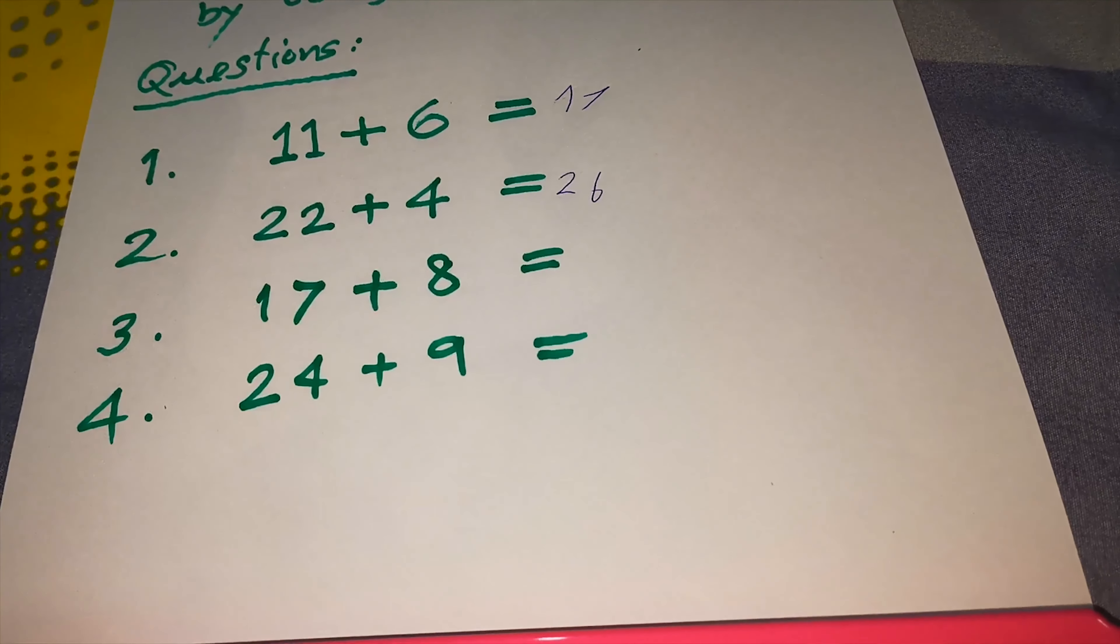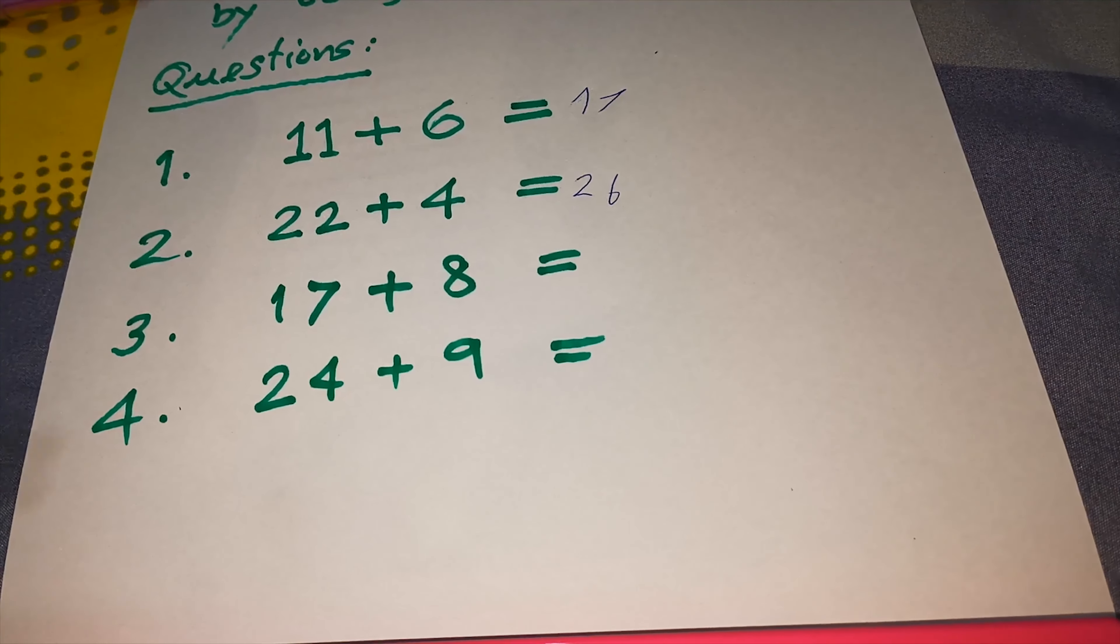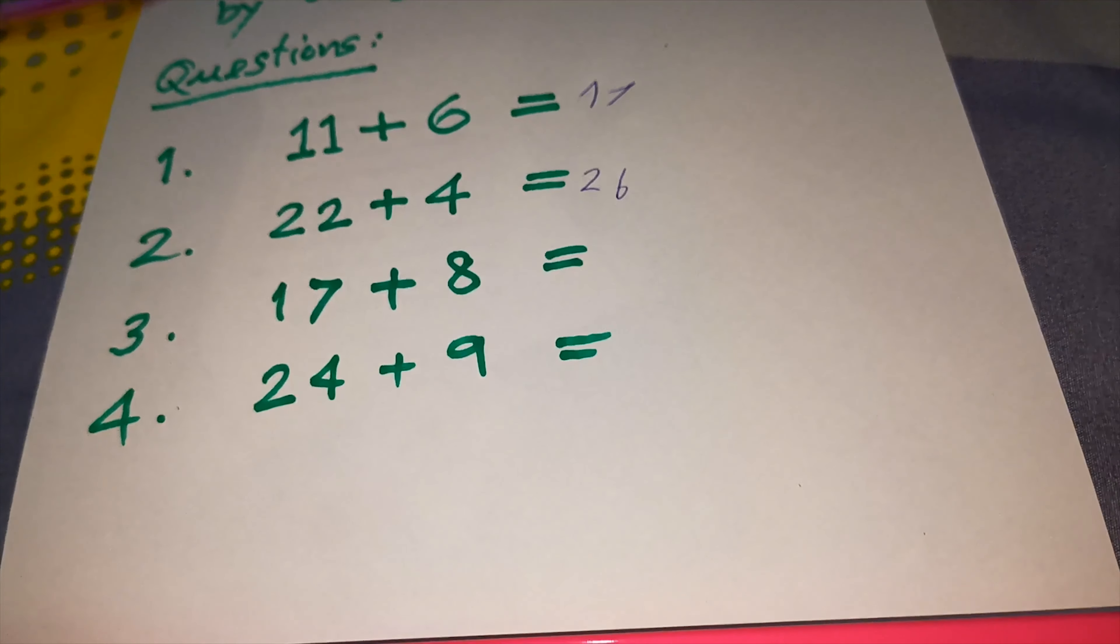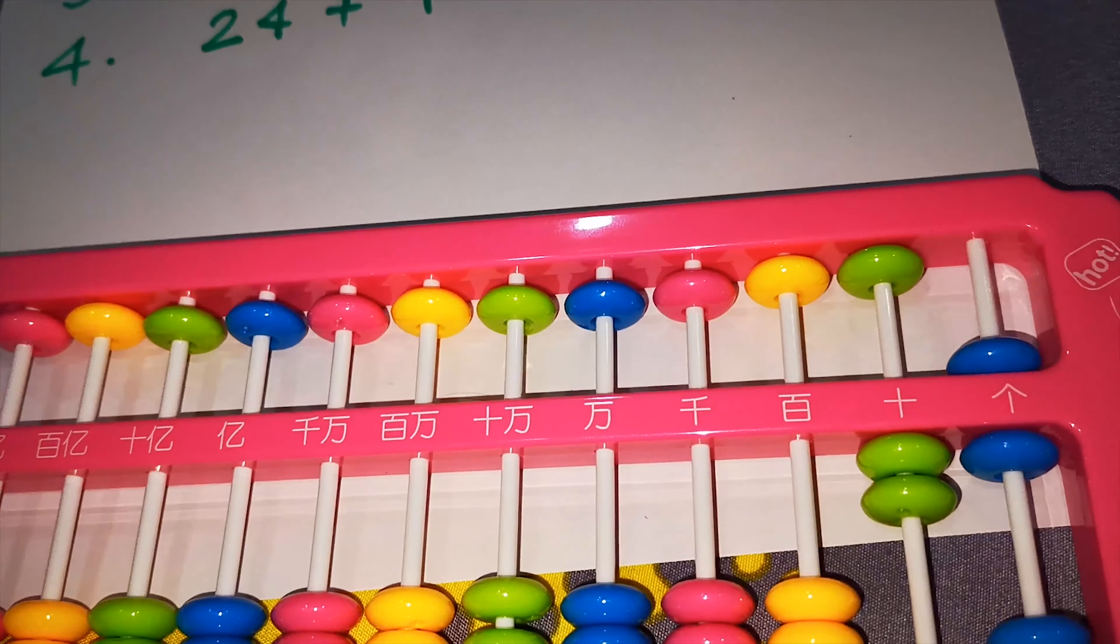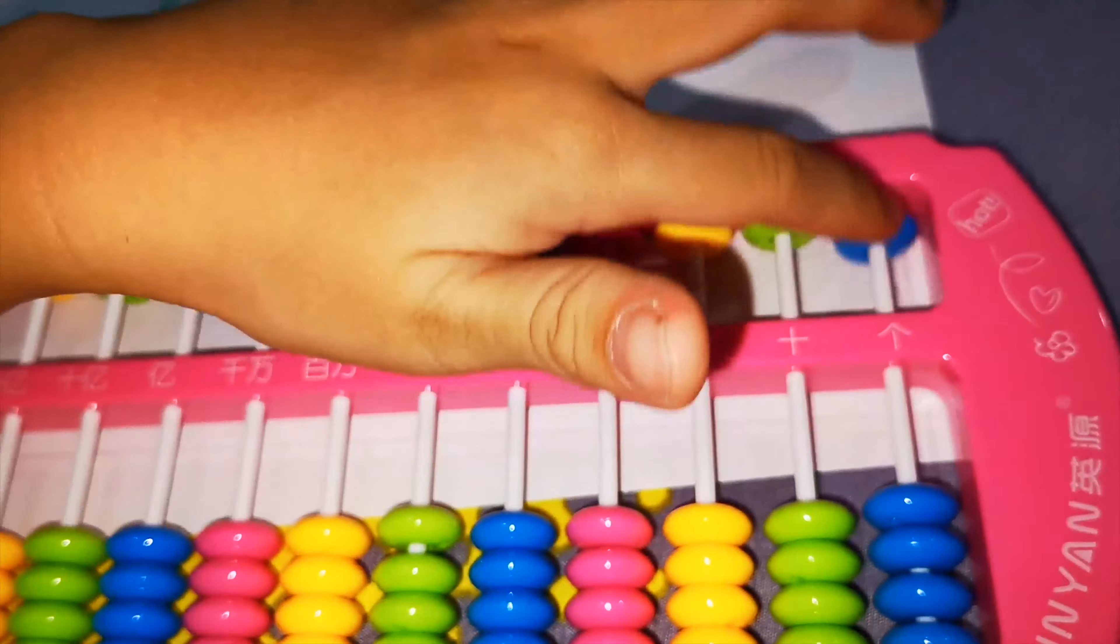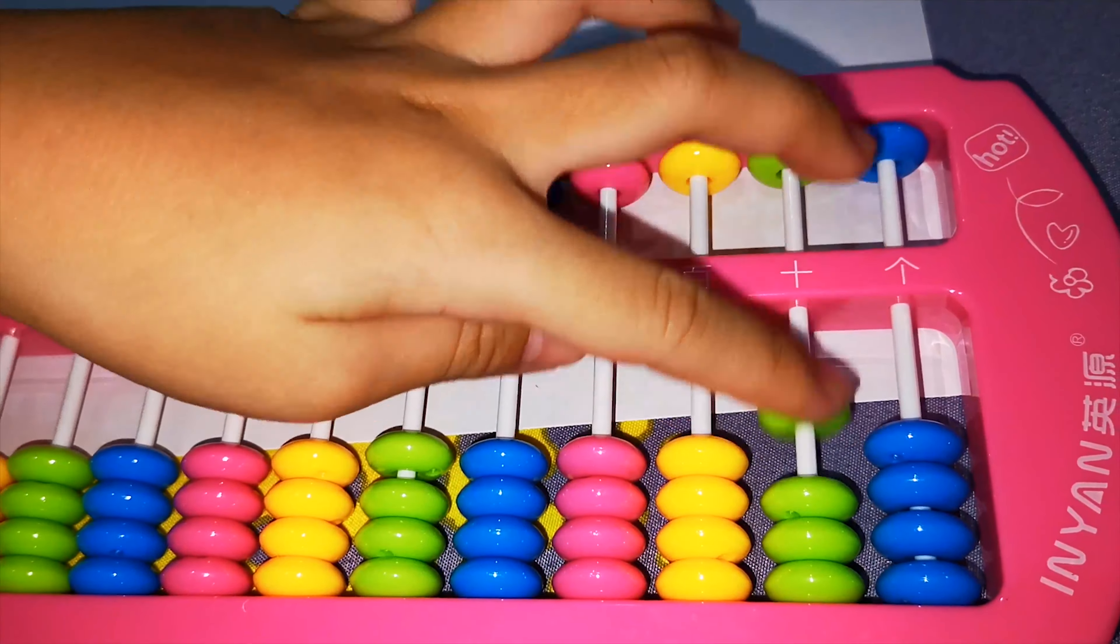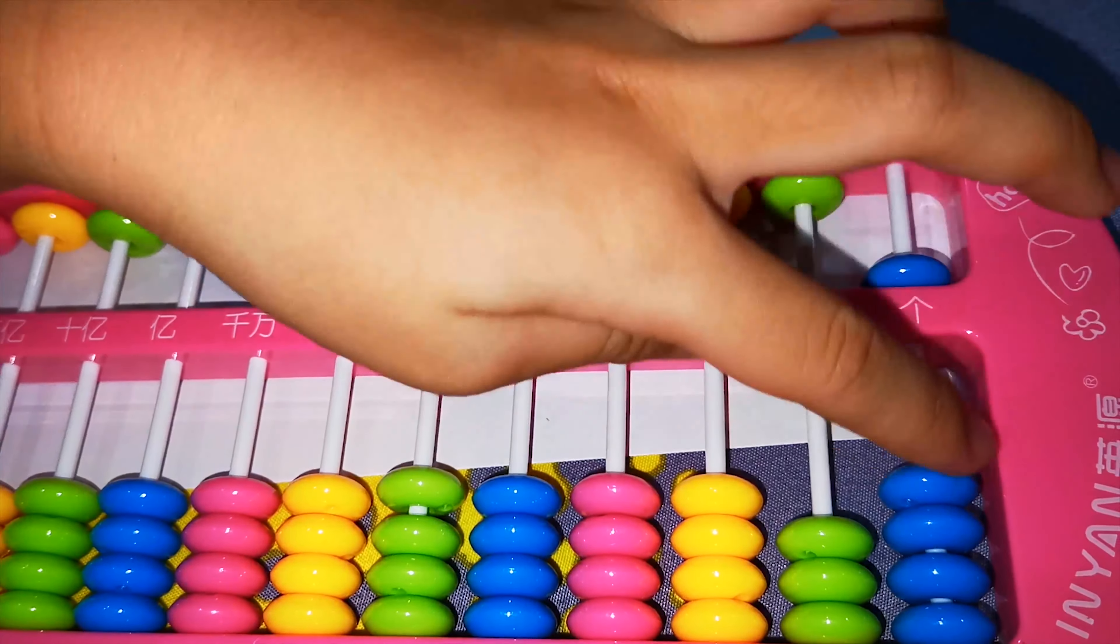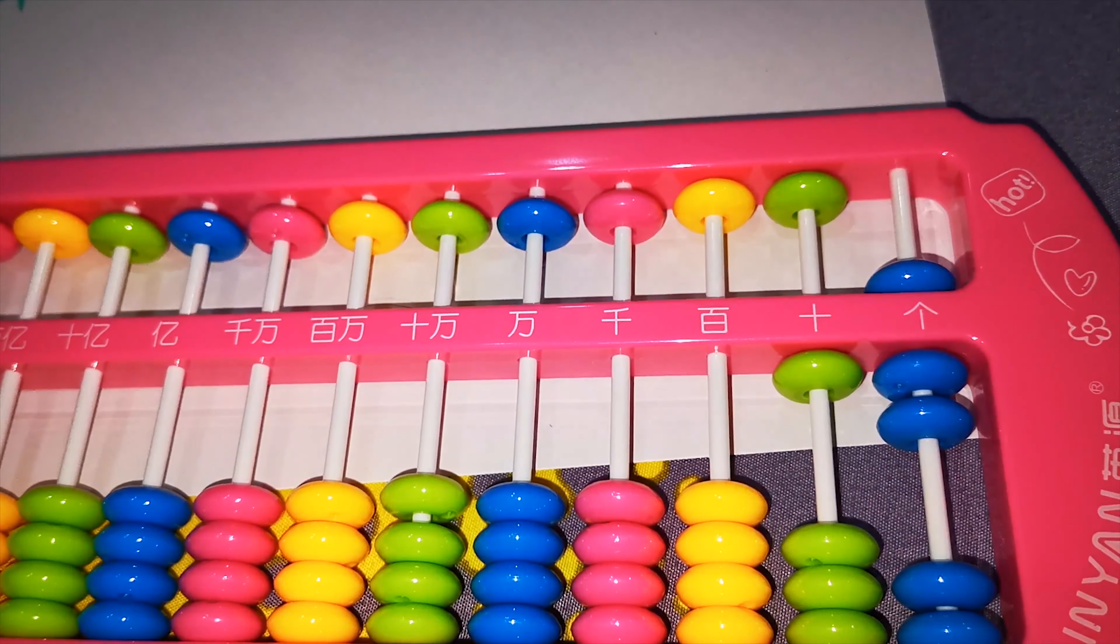Next, equation number 3: 17 plus 8. Here, 17. Add 10 and add 5 and add 2 equals 17. Yeah. And now 8.